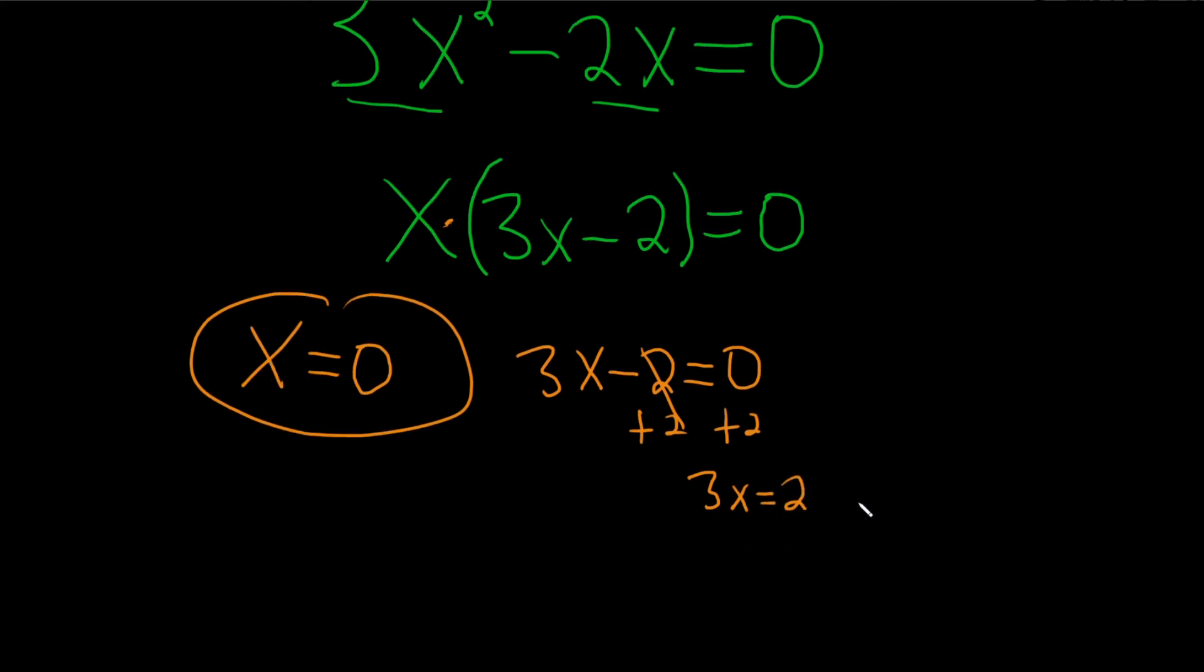And then to finish solving for x, we just divide by 3. So divide by 3, and that gives us x equals 2 over 3. And that would be the final answer.